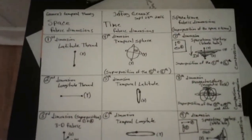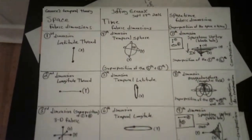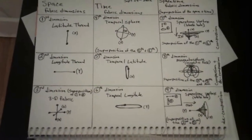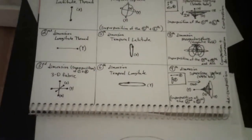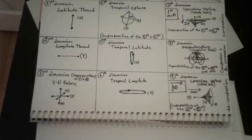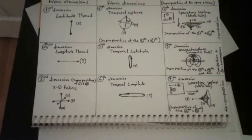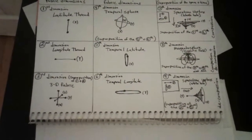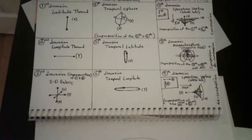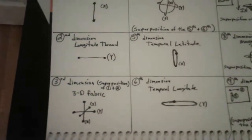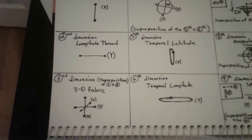That's where I got the idea about superposition. I started out with the latitude thread for the space-time fabric, then the longitude thread, and then the superposition being the latitude thread, longitude, and the Z-plane as a neutral position. All three of them combined make a superposition. So I have three-dimensional space being the superposition of the first and second dimension.